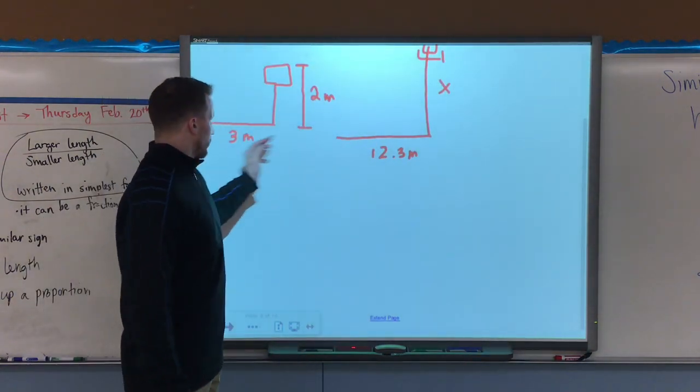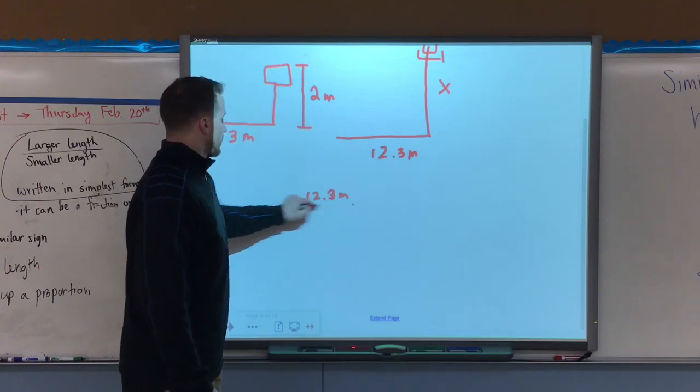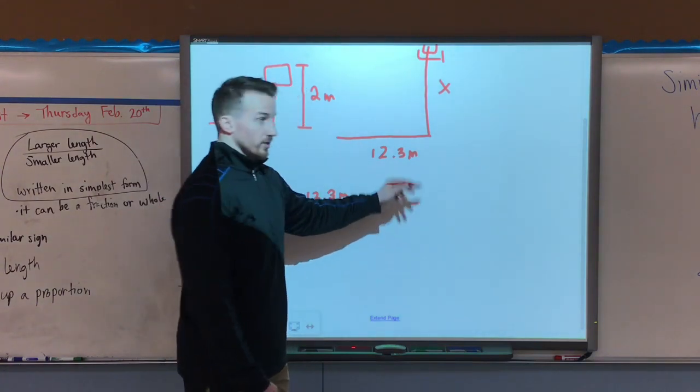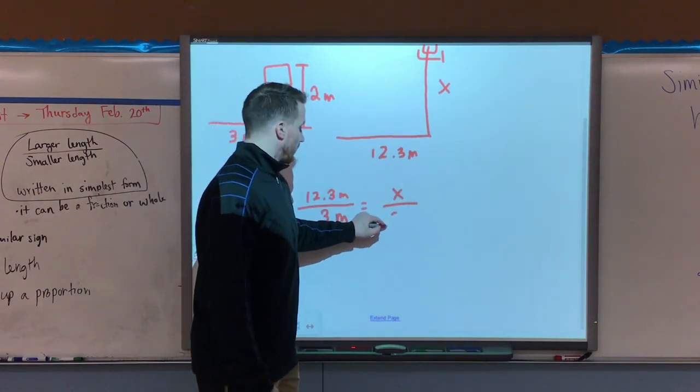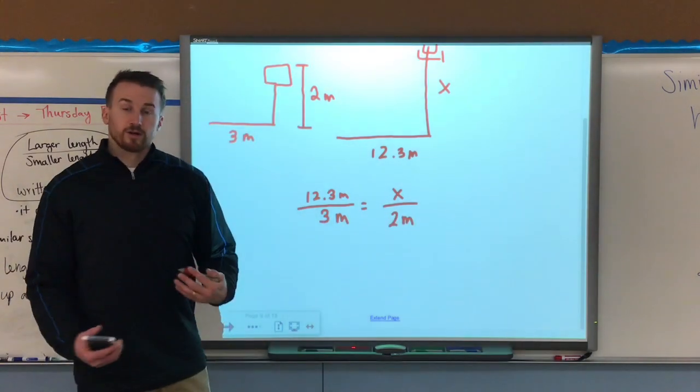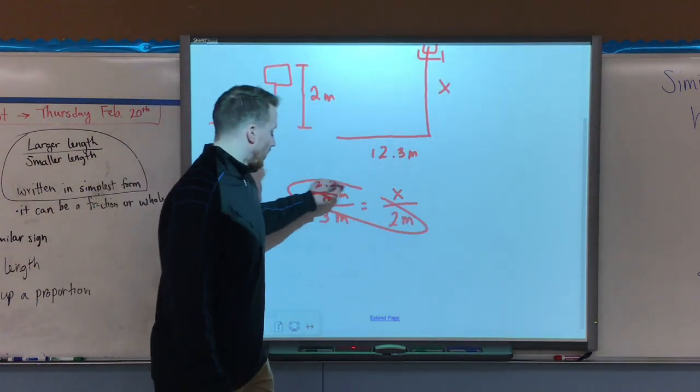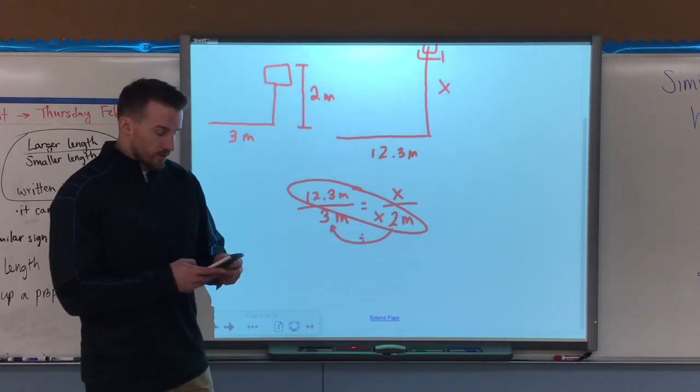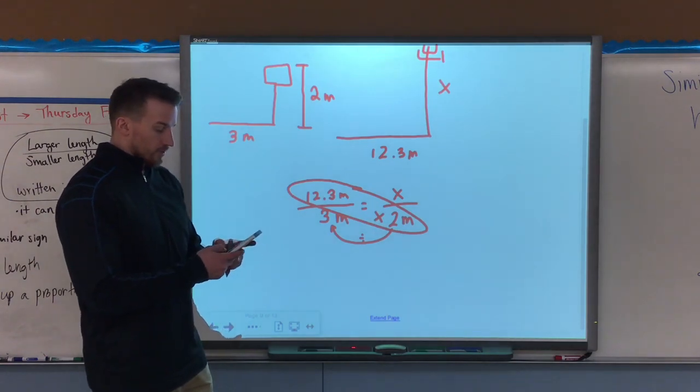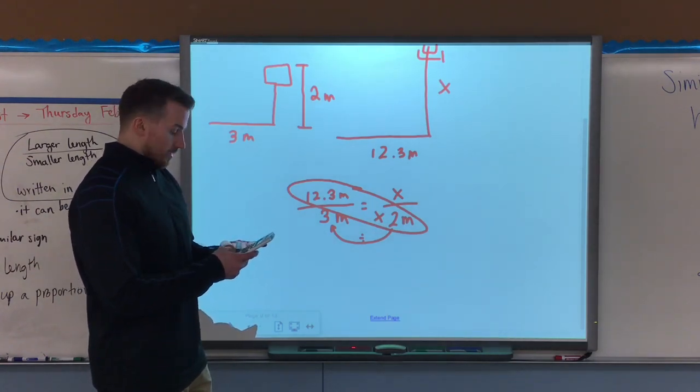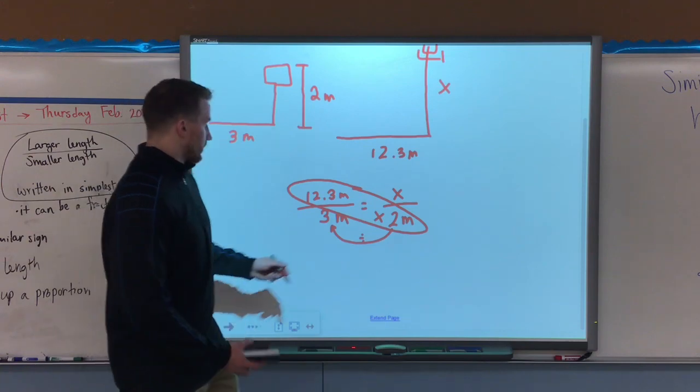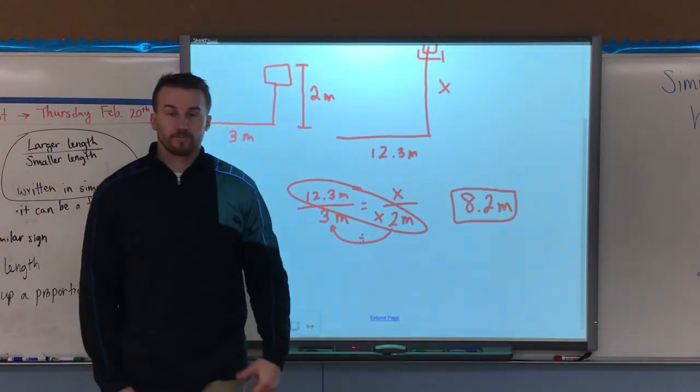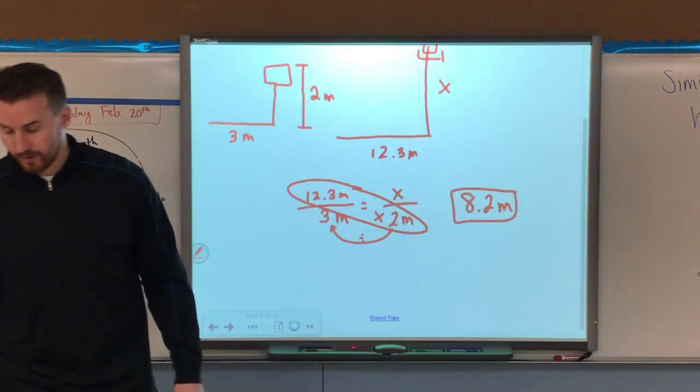I'm going to take again, shadow over a shadow, so 12.3 meters over my 3 meters. Set that equal to x, which is I don't know, over the height of the street sign, 2 meters. Cross multiply and divide. Multiply diagonally across, divide the values. So again, I'm using my calculator, 12.3 tenths multiplied by 2, divide that by 3. I get 8.2 tenths and that's in meters. So we can draw pictures to help us solve indirect measurement as well.